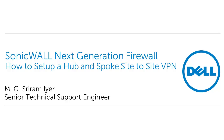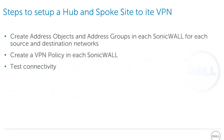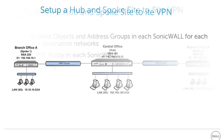In hub-and-spoke VPN, a central site SonicWall acts as a hub with two or more remote site SonicWalls acting as spokes. Each remote site network communicates with each other through the central site. These are the steps to configure hub-and-spoke site-to-site VPN: create address objects and address groups in each SonicWall for each source and destination network, create a VPN policy in each SonicWall, and test connectivity.